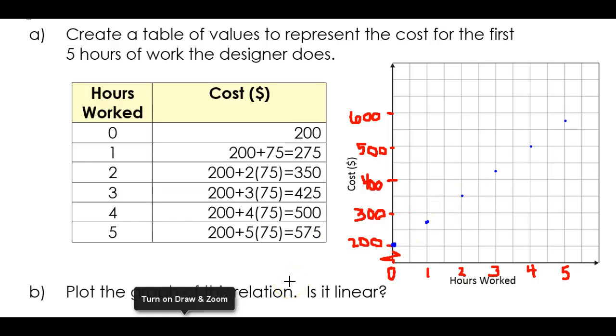So there's all sorts of things that I could figure out from this now. So let's say, for instance, somebody was charged, I don't know, let's say 450 bucks, right? So 450 bucks over here. I would follow this along and say, the web designer must have worked three and a half hours, for instance. So those are some ways that you can use the description in a question to help you fill out a table of values and then create the corresponding graph.